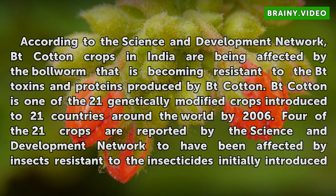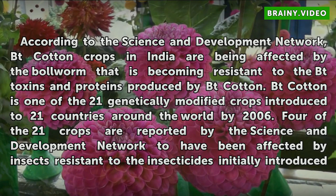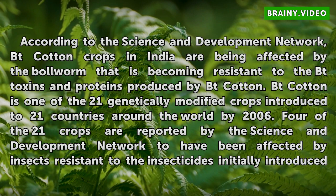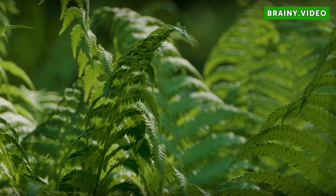Problems. According to the Science and Development Network, Bt cotton crops in India are being affected by the bollworm that is becoming resistant to the Bt toxins and proteins produced by Bt cotton. Bt cotton is one of 21 genetically modified crops introduced to 21 countries around the world by 2006. Four of the 21 crops are reported by the Science and Development Network to have been affected by insects resistant to the insecticides initially introduced to the crops.